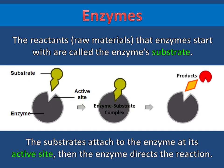The reactants, or raw materials, that enzymes start with are called the enzyme's substrates. The substrates attach to the enzyme at its active site. Then the enzyme directs the reaction, and once the reaction is complete, you end up with the products.